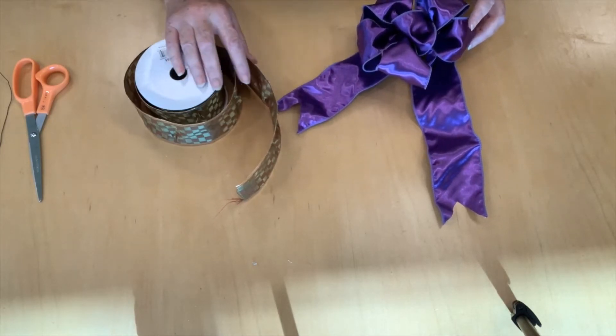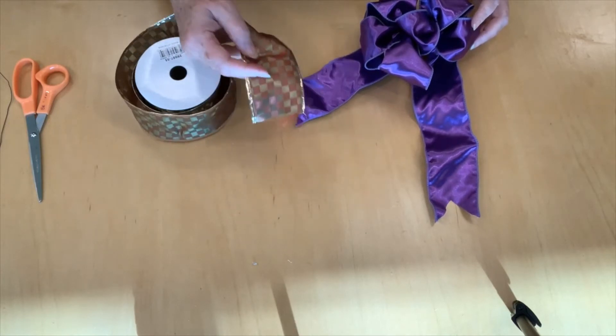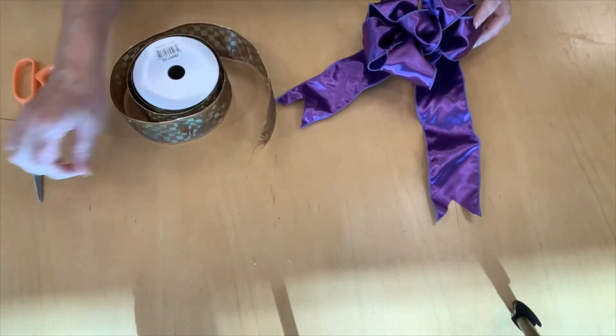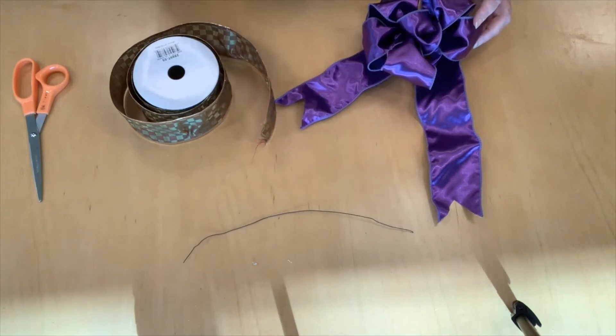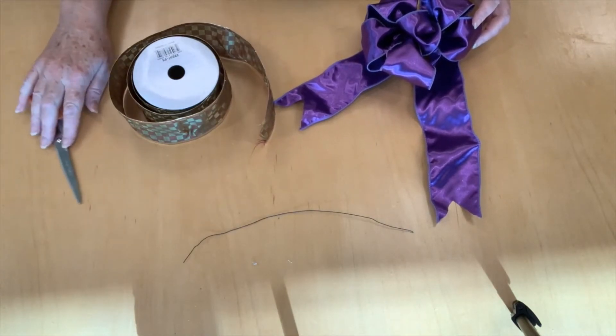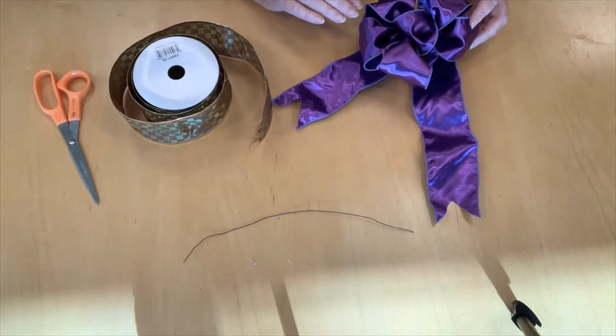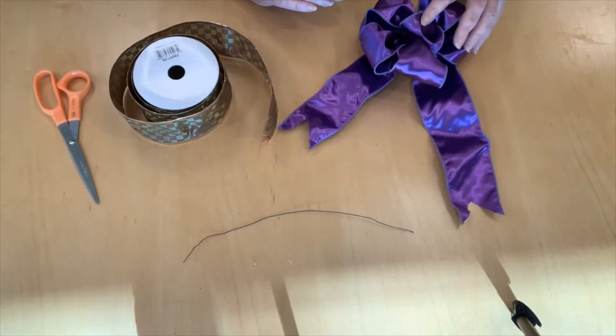I've got some ribbon here which we're going to use to make that bow. We also have a piece of wire that you're going to need to be able to wire it all together and of course your scissors. And that's really about all it takes. So let's get working.